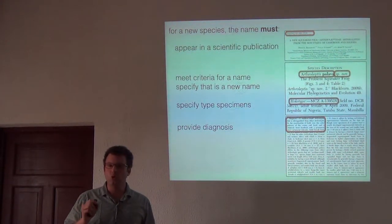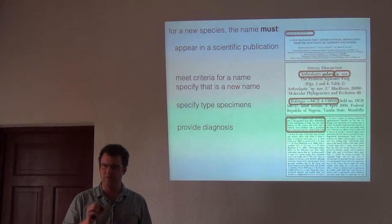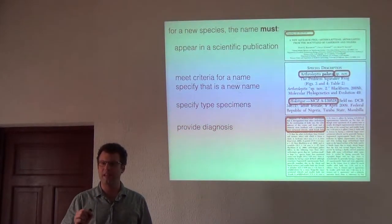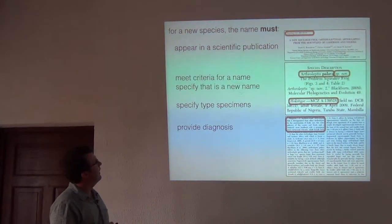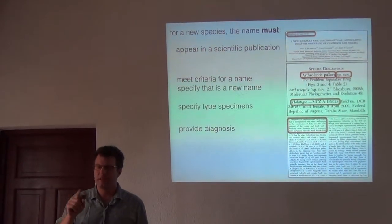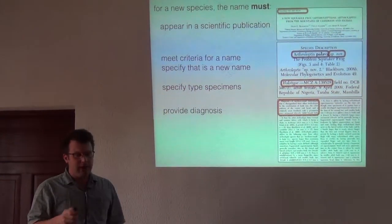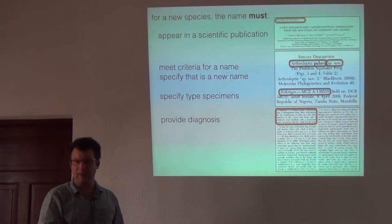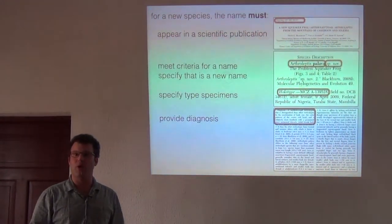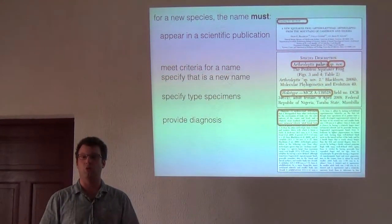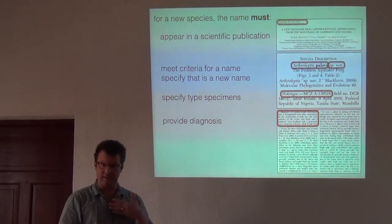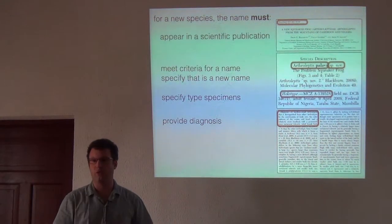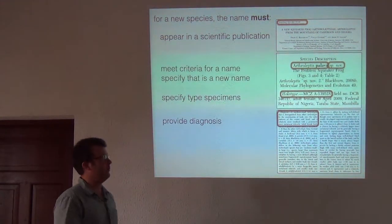To make a new species an available name — and I'll get to the difference between availability and validity in a second — to make a new species name new and valid, the name has to first appear in a scientific publication. The examples I'm giving are mostly from my own publications, just to show how I basically satisfied these rules in writing the species descriptions, because Rafe and I were all concerned about following the rules to make the names available and useful.